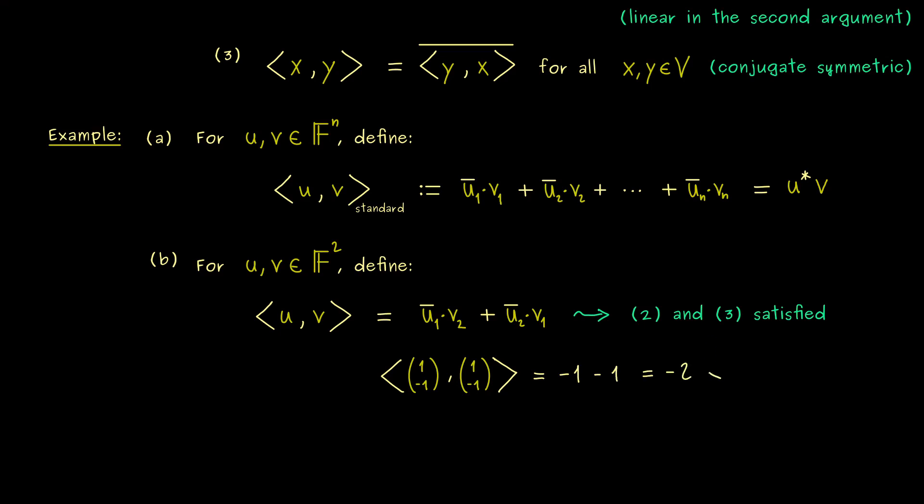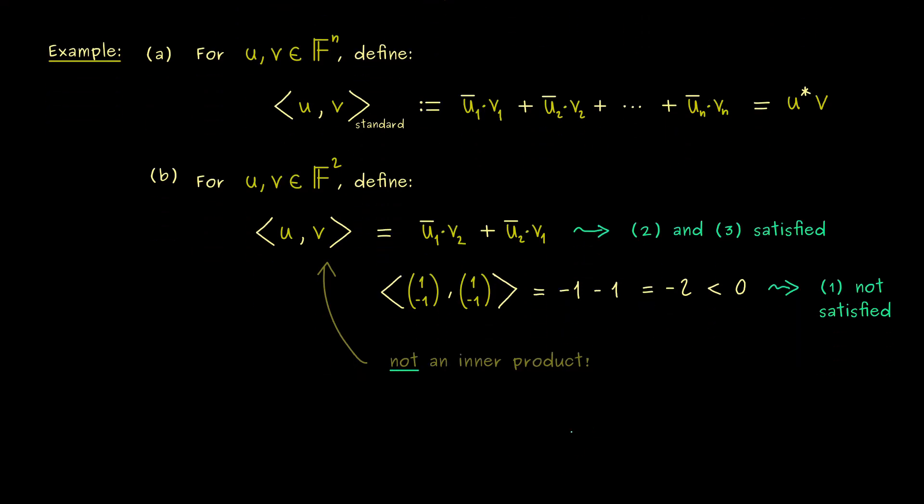Hence, the result is minus 1, which is strictly less than 0. So we can immediately conclude, that this definition does not give us a positive definite map. Hence, this thing here is not an inner product for F^2. So this is a counter example, an inner product really has to fulfill all the three rules.